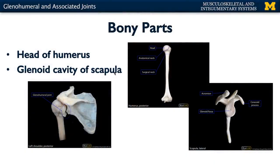Let's begin our discussion of the most proximal joint of the upper limb, or your glenohumeral joint. We colloquially refer to this joint as the shoulder joint. This is the very definition of a synovial joint — it is your most freely movable joint of the entire body. With more mobility, this equates to less stability. So this is also an area where the majority of our injuries occur, along with the knee joint. Let's talk about why this joint is so freely movable, starting with the bony parts.